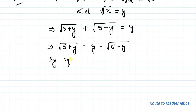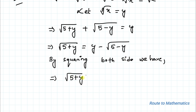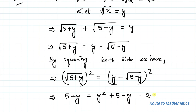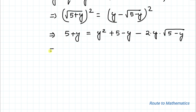In the next step, let's square both sides of the equation. By squaring both sides we have (√(5 + y))² = (y - √(5 - y))². This implies the square root is eliminated, giving us 5 + y = y² + 5 - y - 2y·√(5 - y).